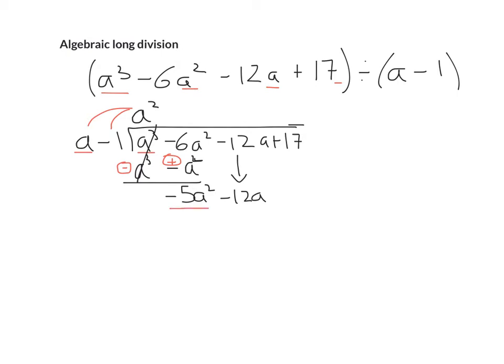What do I multiply a by to get -5a²? You multiply it by -5a. Next step is we multiply the -5a by both the terms on the outside. That gives you -5a² + 5a. We change their signs, and these guys cancel, and we're left with -12a - 5a, which gives you -17a.